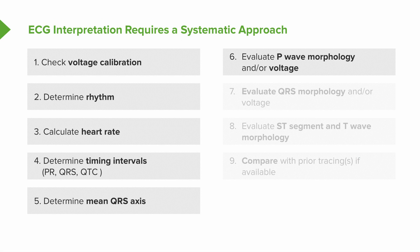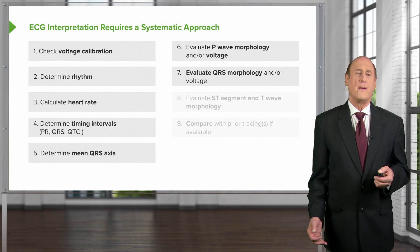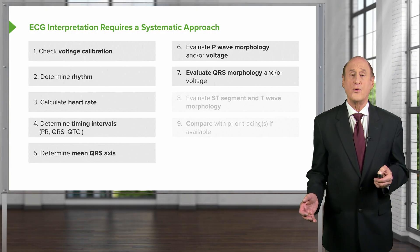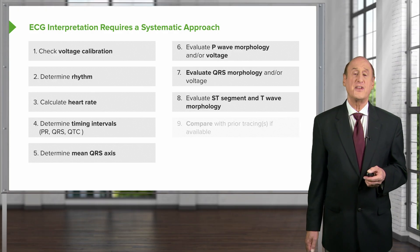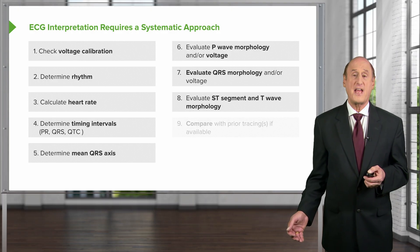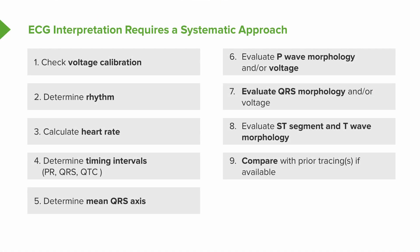We want to look at the P wave morphology to see if it's normal — its voltage and shape — because certain abnormalities of P wave morphology can occur with certain diseases. We want to do the same for the QRS morphology, since heart blocks and things that can lead to pacemakers will change the morphology of the QRS. We'll then look at the ST segment and T wave morphology, as ischemia — lack of blood flow in the heart that can lead to angina or heart attacks — changes the ST segment and T wave morphology. And if we're lucky enough to have an earlier baseline EKG, we compare it to see if there have been changes or something acute going on.